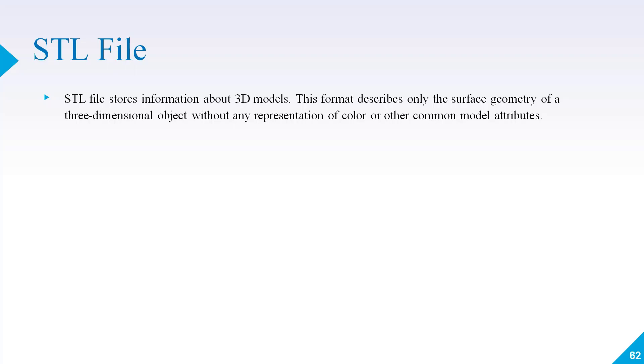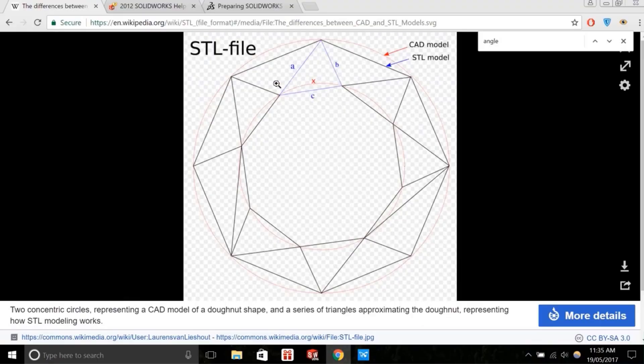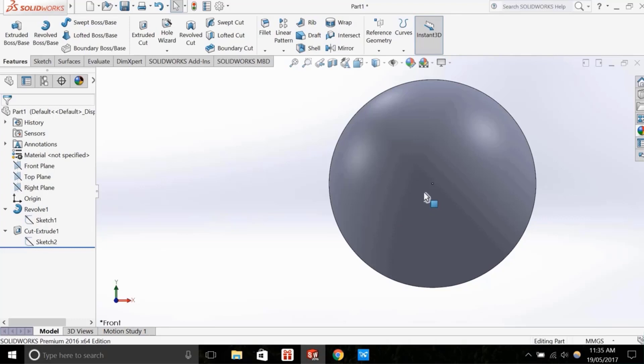STL files store information about 3D models. This format describes only the surface geometry of a three-dimensional object without any representation of color or other model attributes. In an STL file you will get only your model detail, your surface detail, XYZ detail. You will not get details of what type of color the object is having. These files are usually generated by a computer-aided design program.